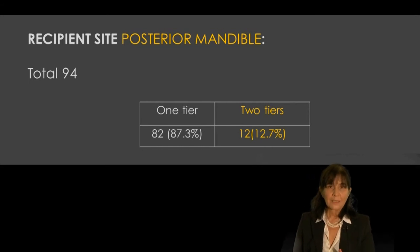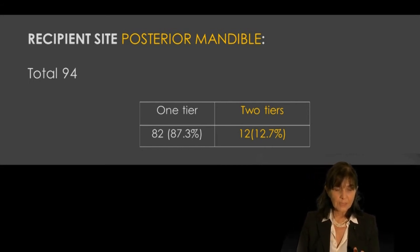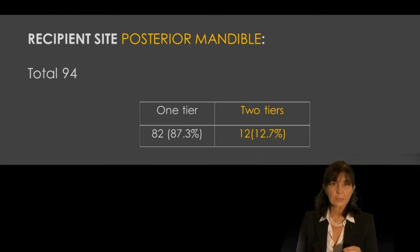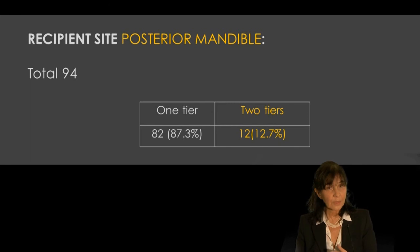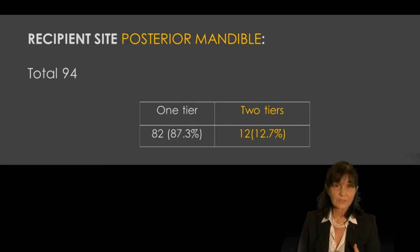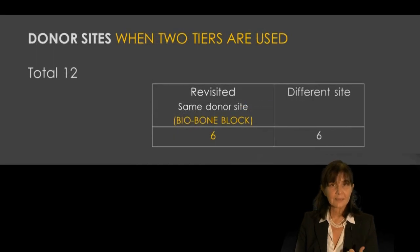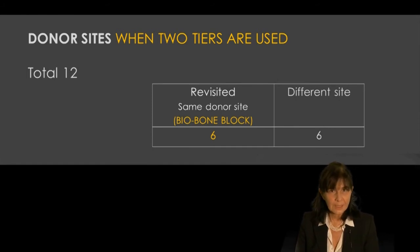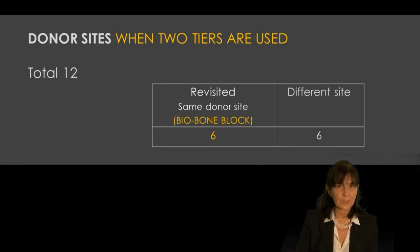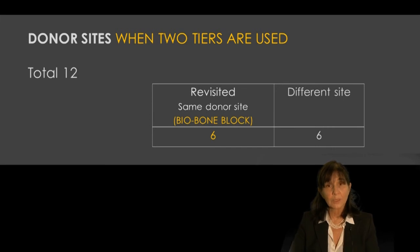Looking back at the numbers for the posterior mandible: out of 94 total onlay bone grafts, 87.3% required only one tier. About 13% needed two layers, and only half of those used the bio bone block revisited technique. As of the 1998–2010 data collection period, I am increasingly using the donor site revisited approach.